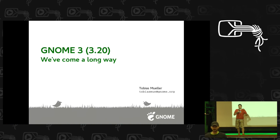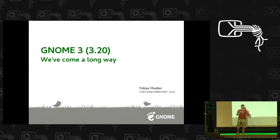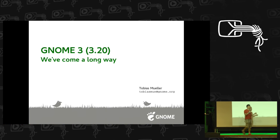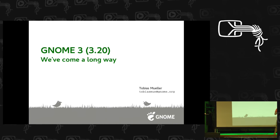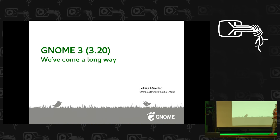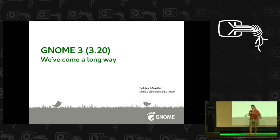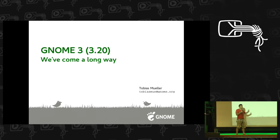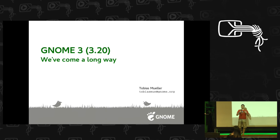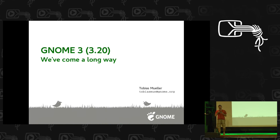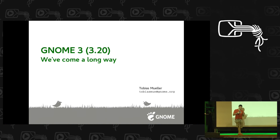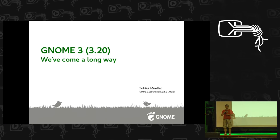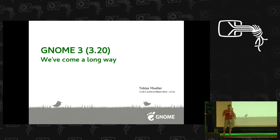GNOME 3 is our newest release of a desktop system, and we've received criticisms over the last five years, especially in the beginning. I want to show you how we've reacted and what our story is regarding change. I will present a brief overview of GNOME 3, then examples of how we've evolved it, and finish by inviting you to take part in the development of a great free software desktop system — hopefully inspiring you to join the community, give feedback, and make change happen.